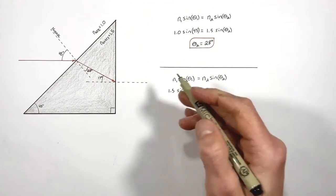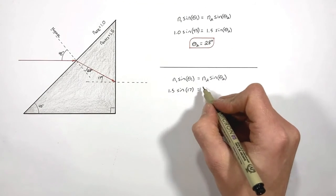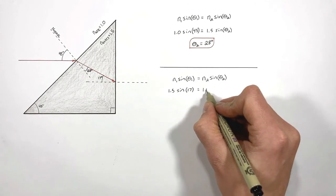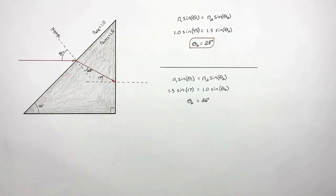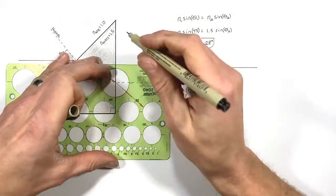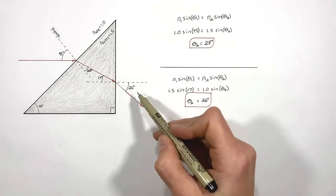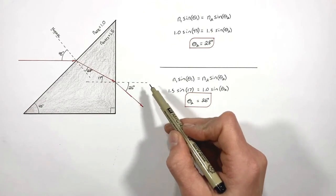Now the ray is traveling into the air, so the index of refraction in air is 1. And we find the refracted ray makes an angle of 26 degrees relative to the normal vector.